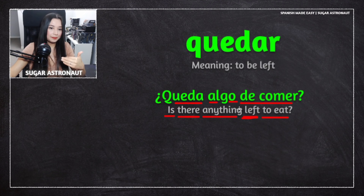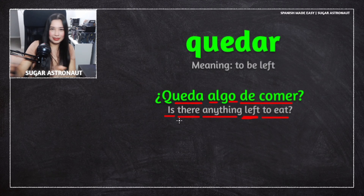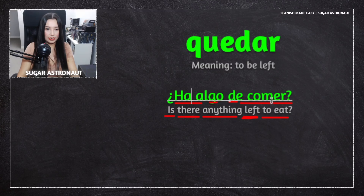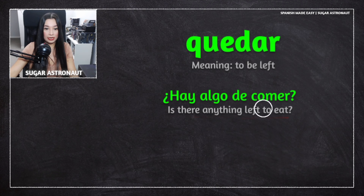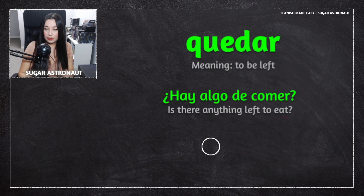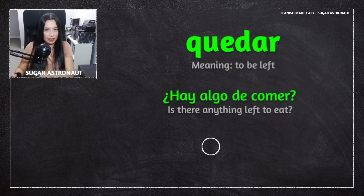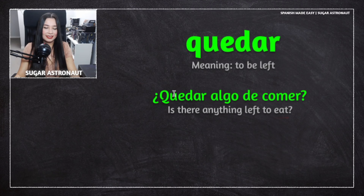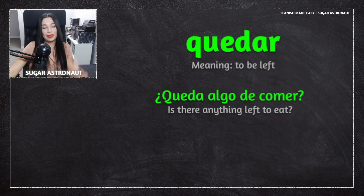In English we'd say 'Is there...' but in Spanish with 'quedar' you don't need the 'there' word. You can also say '¿Hay algo de comer?' — 'hay' means 'is there' in a question, or 'there is/are' in a statement. But when using 'quedar,' you just say 'queda algo de comer' — is there anything left to eat.